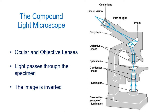Compound light microscopes are generally much more useful in a microbiology laboratory. We have several lenses. Light from the illuminator at the bottom passes through a condenser lens that focuses light onto the specimen on the stage. The light then passes through the objective lenses, gets redirected by a prism, through the ocular lens, and then onto your eye. The image is magnified within the objective lenses and again within the ocular lens. The image is also inverted, which takes some getting used to.